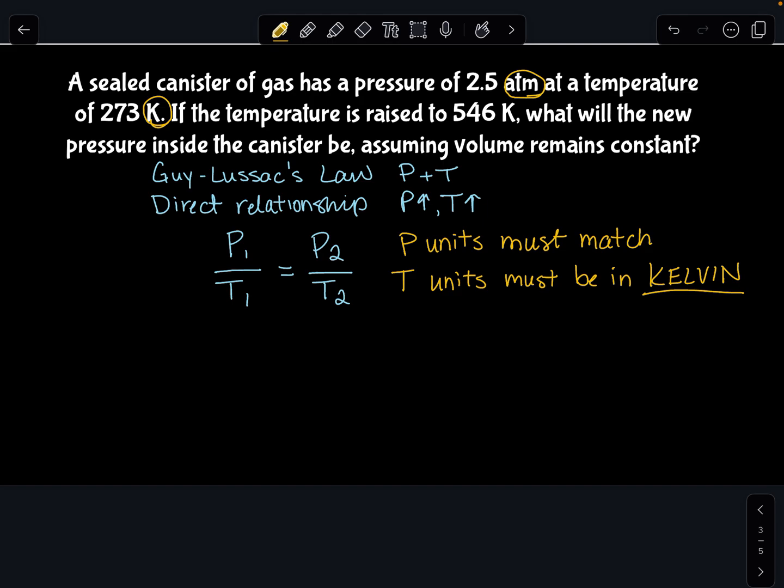So in that scenario, the first thing I'm going to do is write down my equation. Then I'm going to list my variables. So that as I'm reading a word problem, I can fill in these variables and find out which one I'm missing. For equations like this, you're always going to be given three of the four.